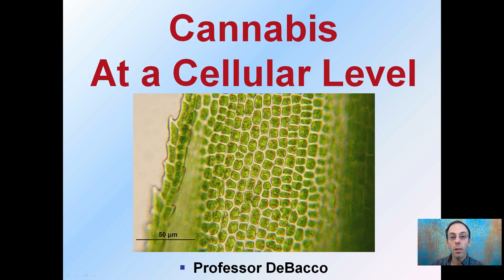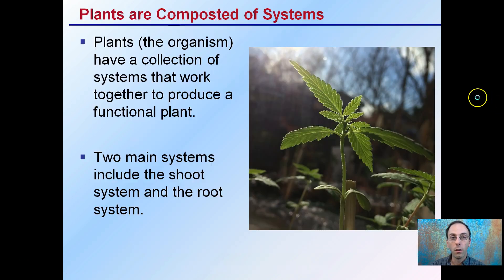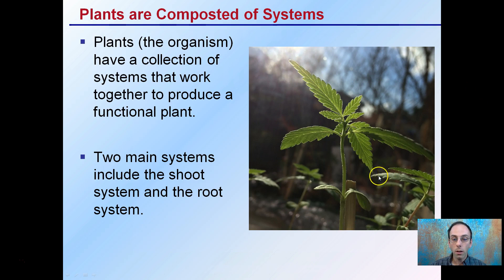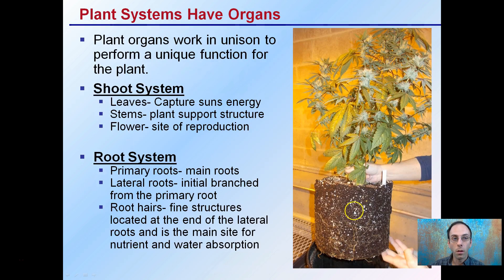Here we're going to look at cannabis at the cellular level. Plants are composed of systems — the organism has a collection of systems that work together to produce a functional plant. Two main systems include the shoot system, which is what we see here, and below ground we have the supporting root system.